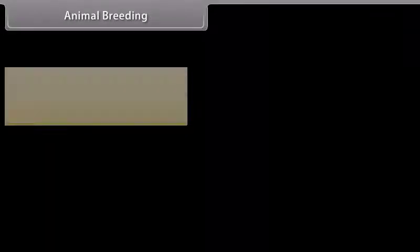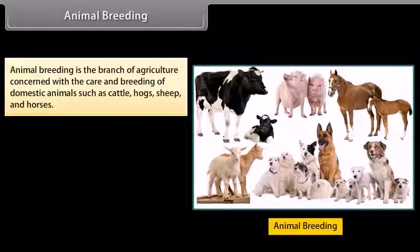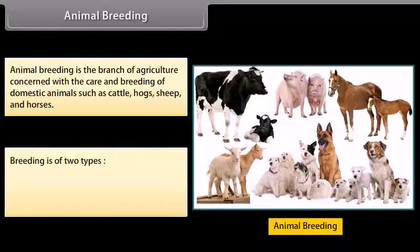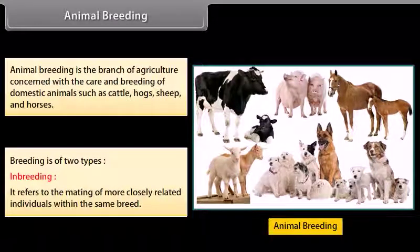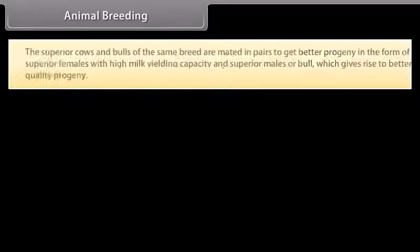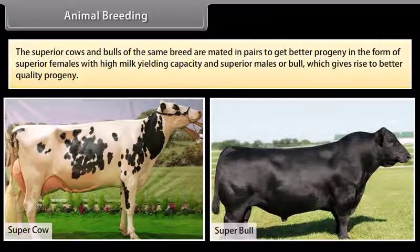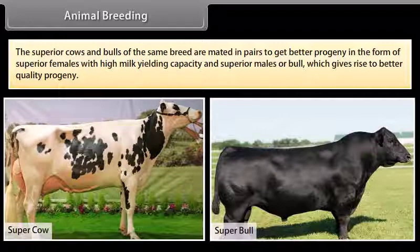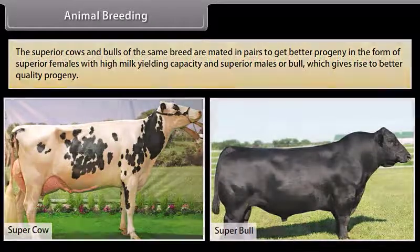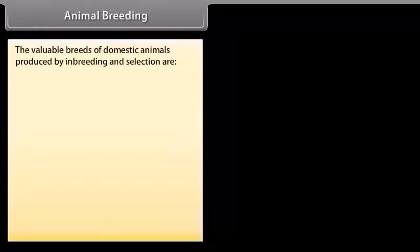The important components of poultry farm management include: selection of disease-free and suitable breeds, proper feed and water for the birds, proper and safe farm conditions, and hygiene and health care of the birds. Animal breeding is the branch of agriculture concerned with the care and breeding of domestic animals such as cattle, hogs, sheep and horses. Breeding is of two types.